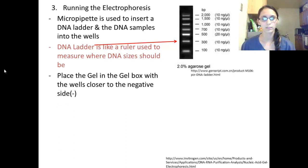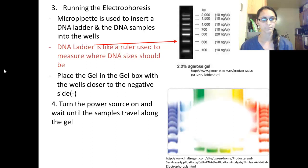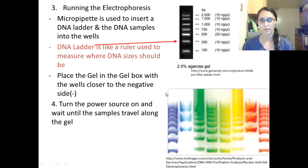Next we place the gel that we made into the gel box, and the wells should be placed closer to the negative side of the gel box. Next we turn the power source on and wait until the samples travel along the gel. Here's an example of the gel. The wells would be here on top, and when the electricity is turned on the current flows from the negative side of the gel here to the positive side.